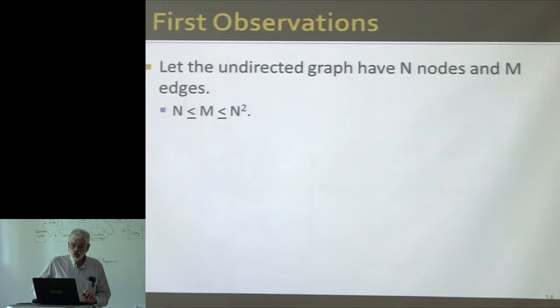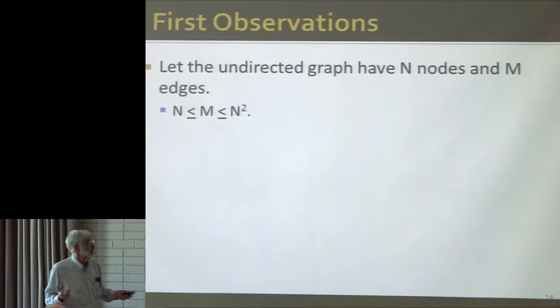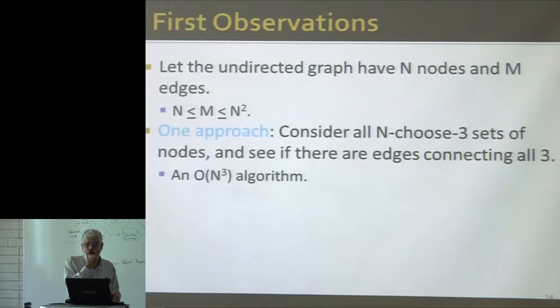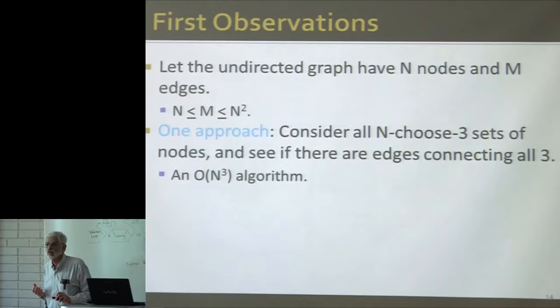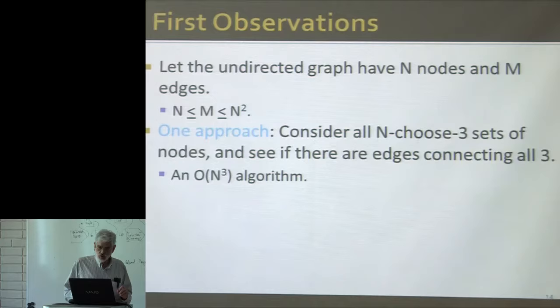I'm going to assume that I have n nodes and m edges. M will be at least n, and at most, obviously, can't be more than n squared — actually, can't be more than half n squared. So one thing I could do to count the triangles is I could just go through all triples of nodes — that would be n cubed over 6, because I just want sets of three nodes — and see if there are edges connecting them in all possible ways. That's an order n cubed algorithm.